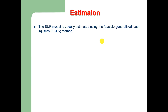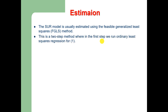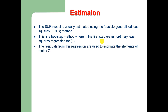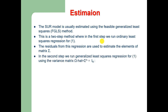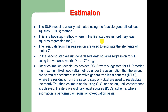The seemingly unrelated regression model is usually estimated using the feasible generalized least squares (FGLS) method. This is a two-step method where in the first step we run ordinary least squares regression, and the residuals from this regression are used to estimate the elements of the matrix sigma. In the second step, we run generalized least squares regression using the variance matrix omega-hat, where omega-hat equals sigma-hat.